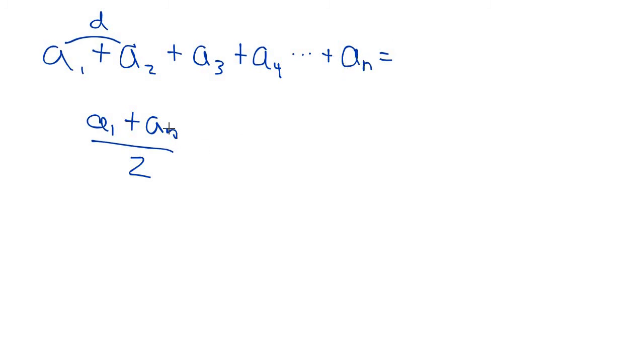And then, since there are n terms, all I have to do is just multiply this by n. And we are done. This is essentially our formula: n times a1 plus an all over 2.